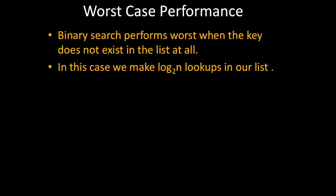The worst case for binary search is when the key does not exist in the list at all. In this case, we're going to make log base 2n lookups in the list. And let's examine how we arrive at that. How do we know that it will make log base 2n lookups in the worst case? Well, to do this, I'll define question mark as the number of lookups we'll make in the worst case.